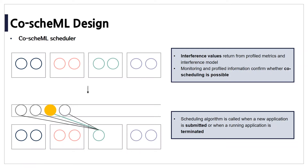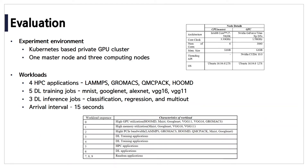The scheduler also exploits monitoring and profiled information to confirm whether co-scheduling is possible, enabling prediction of OOM failure. The scheduling algorithm is triggered when users submit an application or when a running application terminates. When an application in a node terminates, it calculates all pairs between the remaining application in that node and applications waiting in the queue. If the yellow application represents the minimum interference value, the scheduler dispatches it to that node. To evaluate CoScheduleML, a Kubernetes-based private GPU cluster with one master node and three computing GPU worker nodes is used.